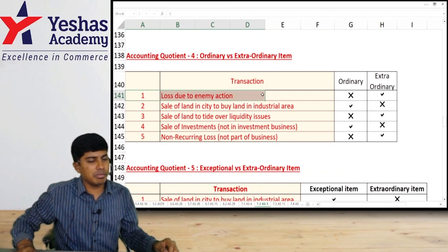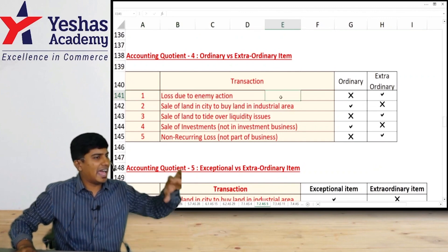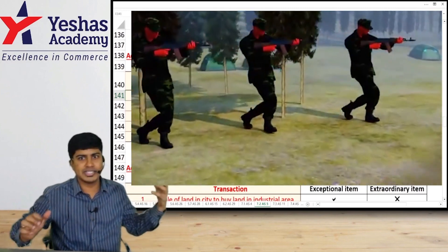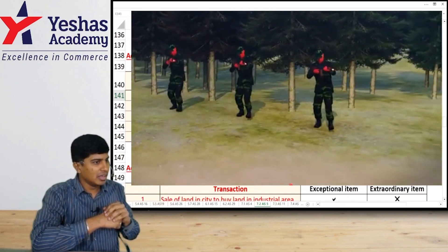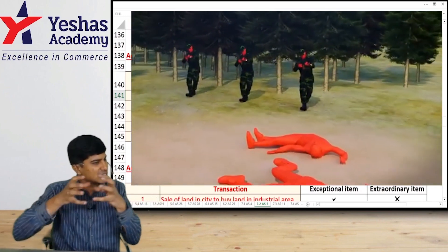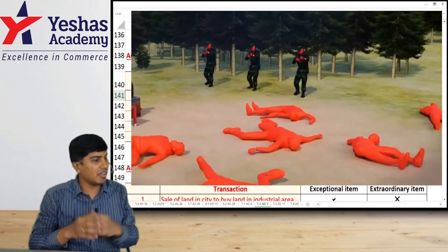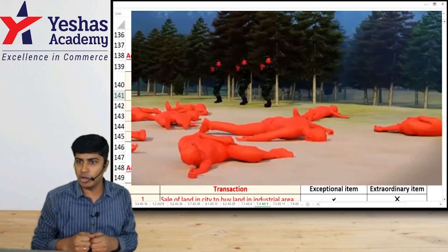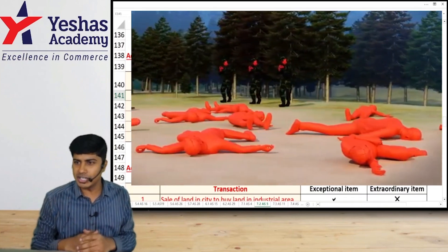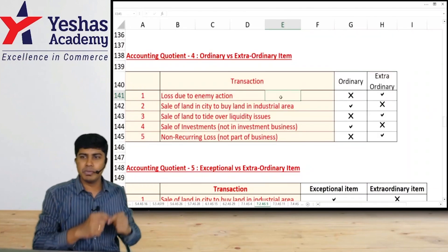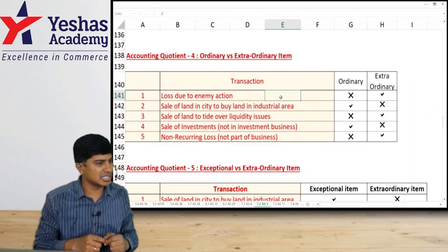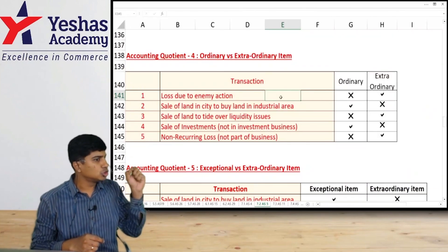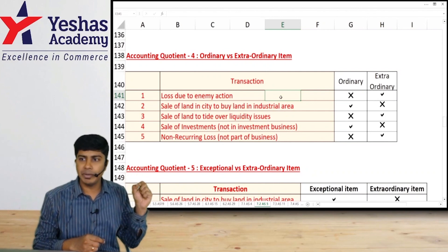Loss due to enemy action. If an enemy takes an action on our country — for example, an attack like Pahalgam happened — your business is situated in the area where terrorists attacked and your business got impacted because of this and you incurred some loss. That loss has appeared in your P&L statement. Should this item in your P&L be disclosed separately?